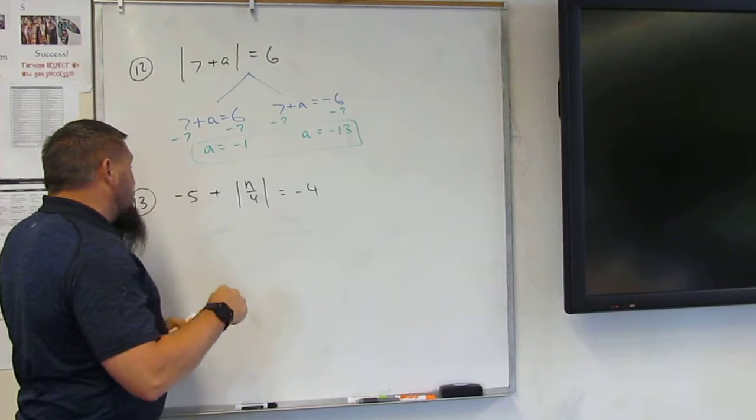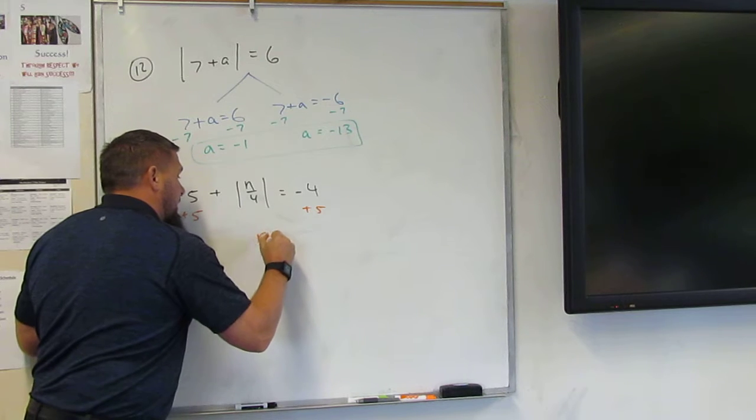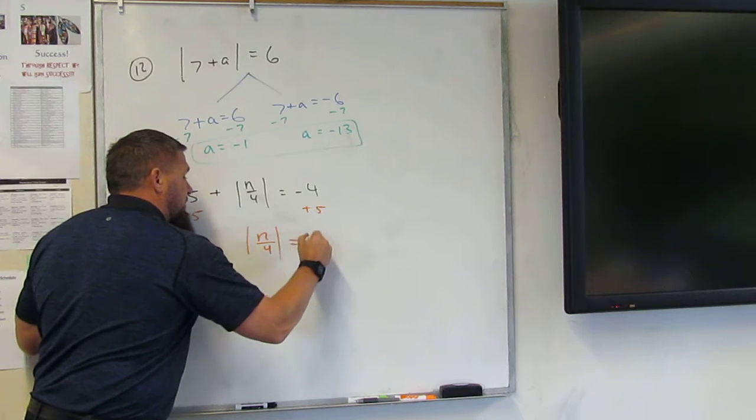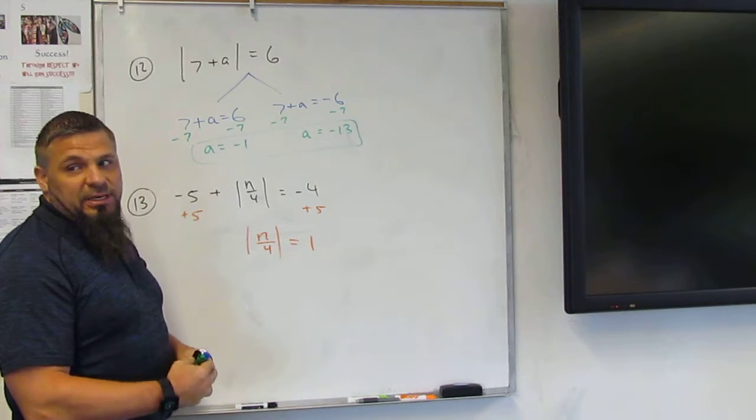Does that make sense? So I'm going to add 5, so I get n over 4 is equal to 1. Does that make sense? And then I want to split it up.